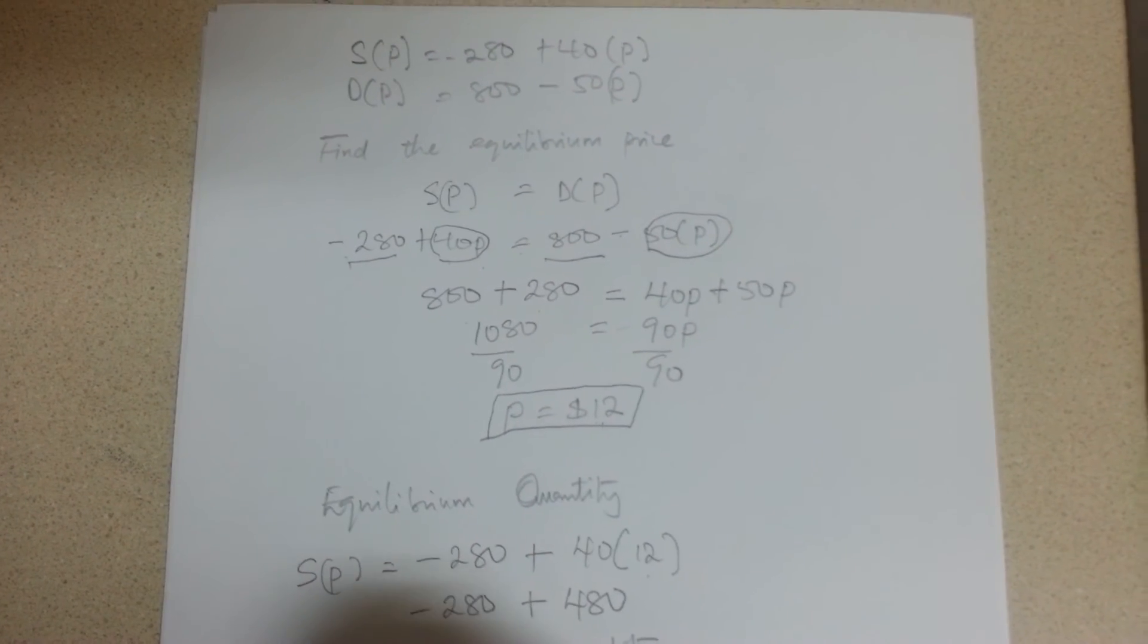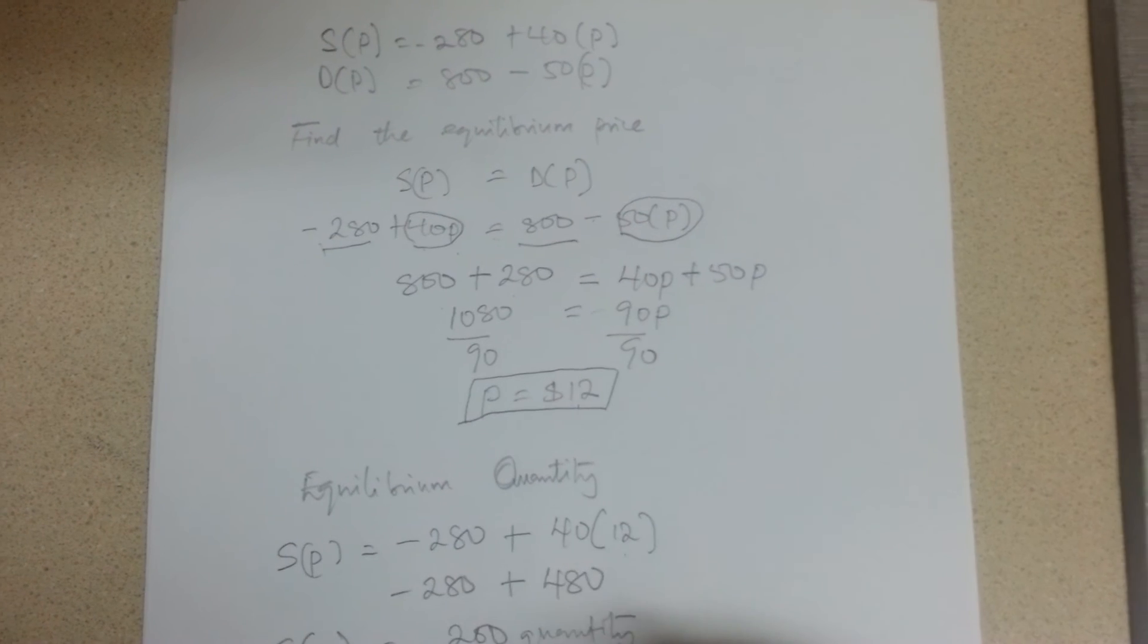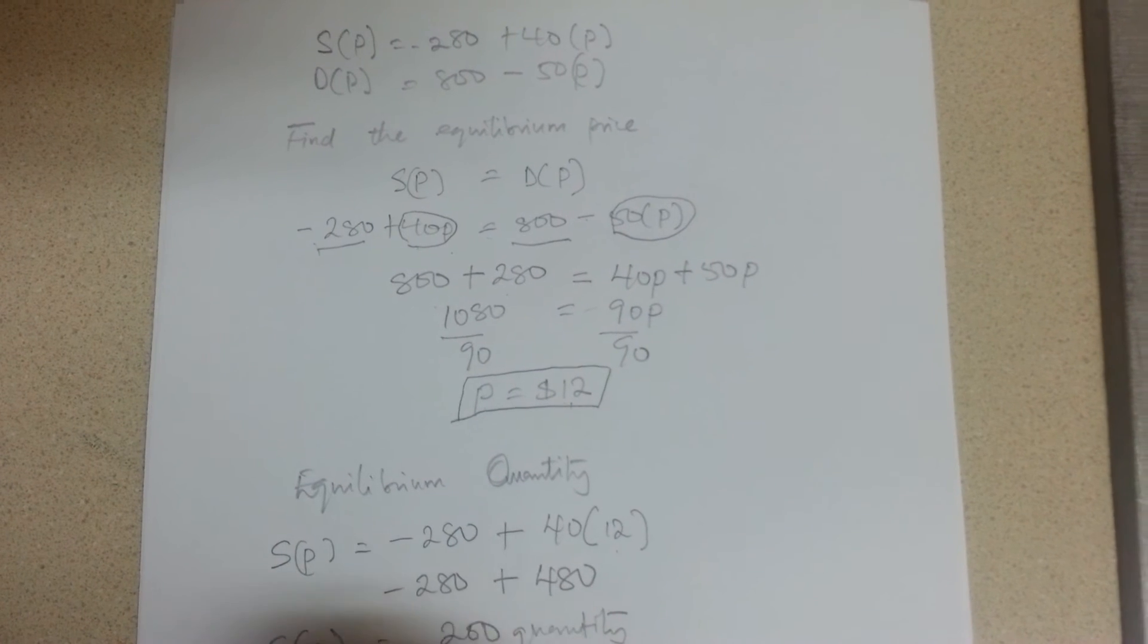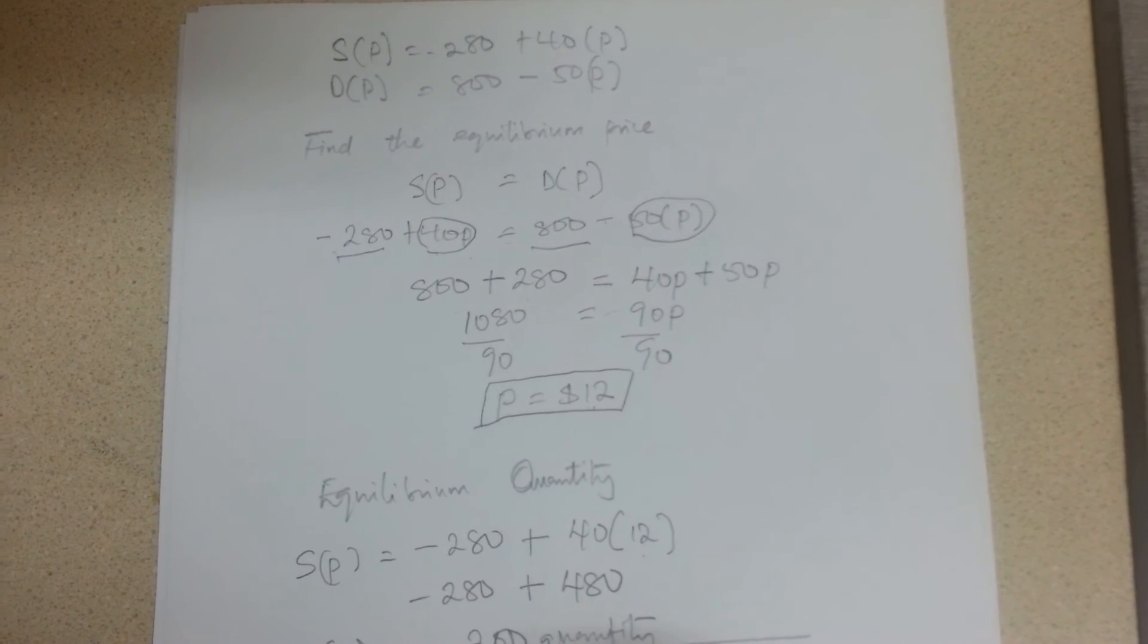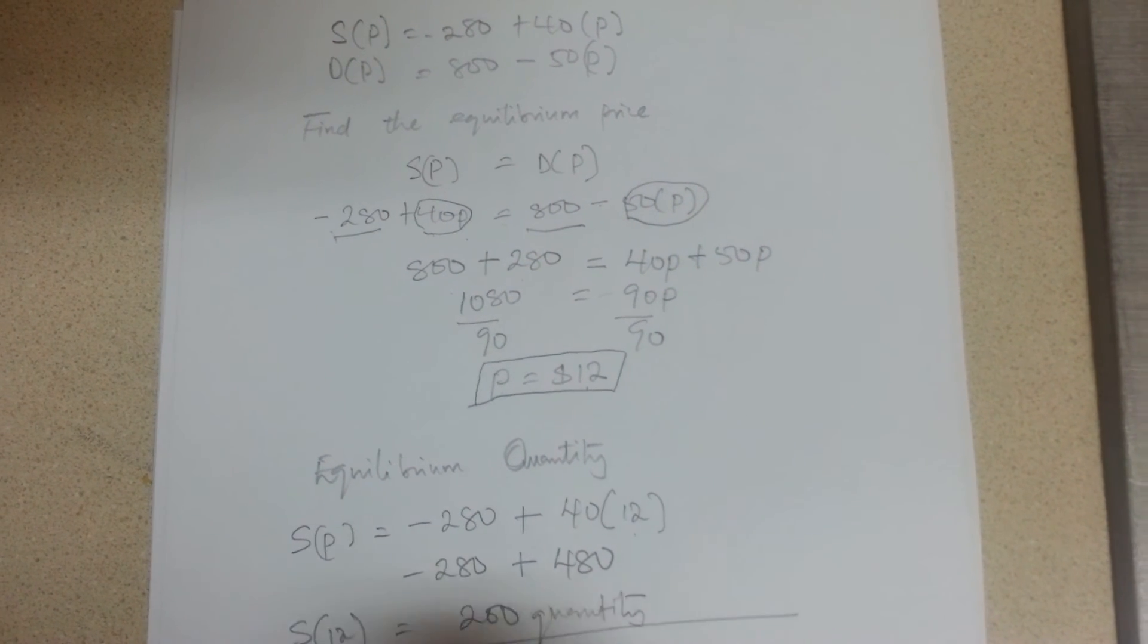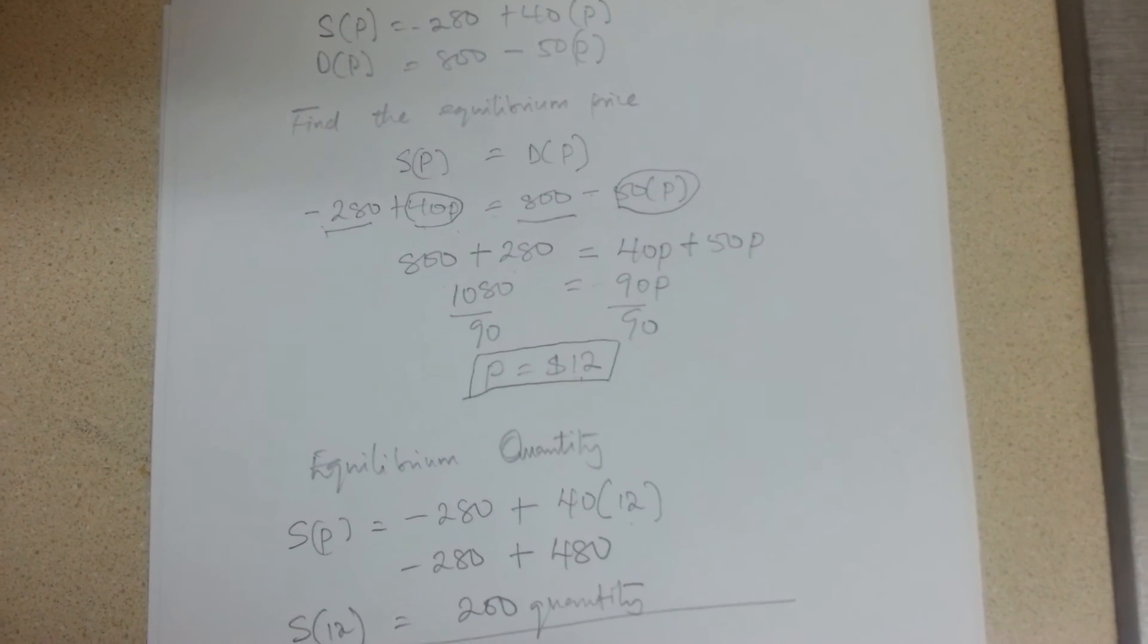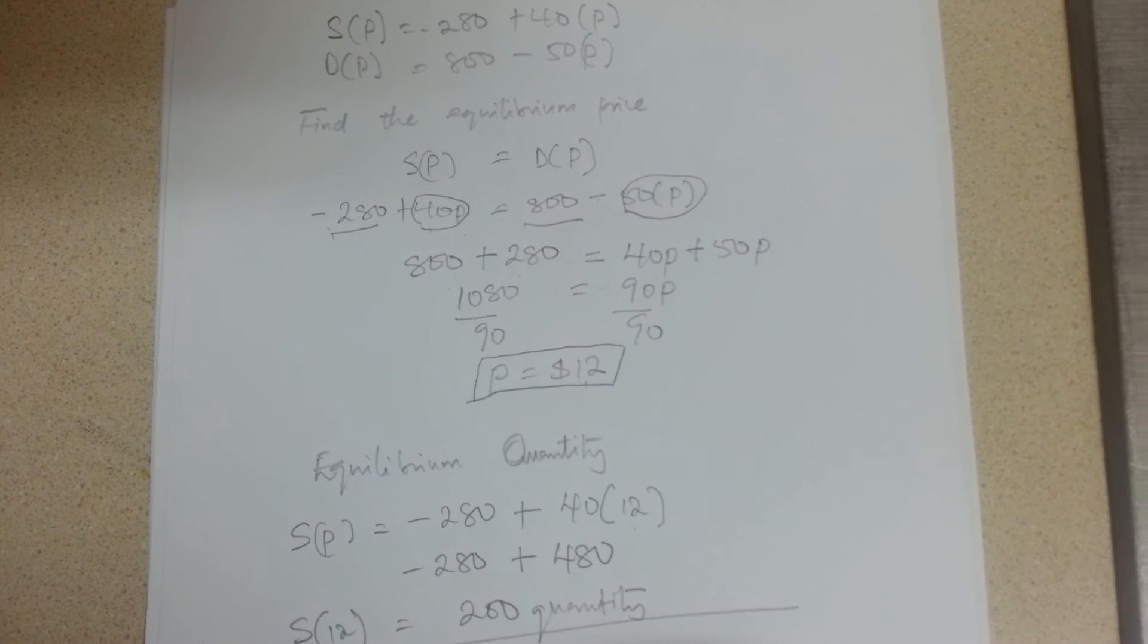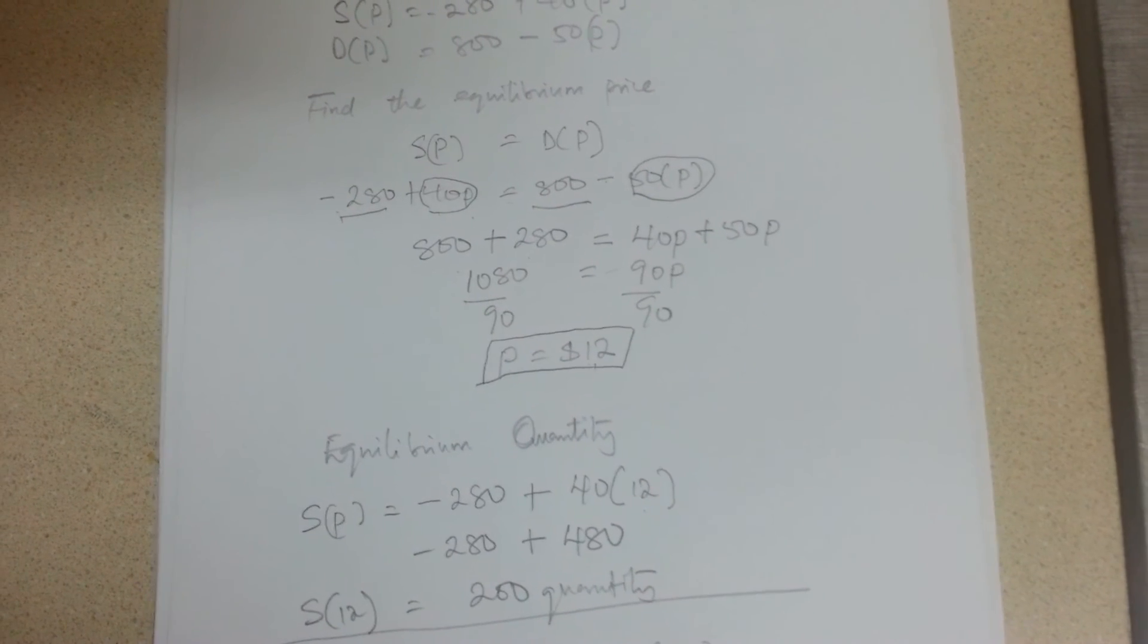For every $12 you get 200 quantity. We can also take the demand equation, which is 800 minus 50 times 12, which gives you 800 minus 600, that is also 200 quantity.